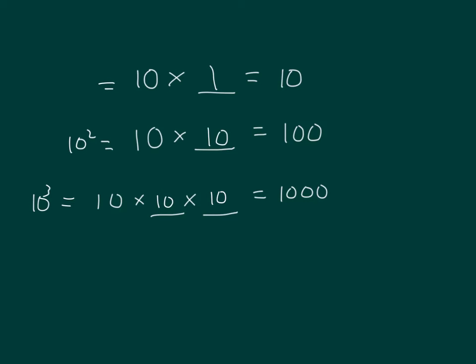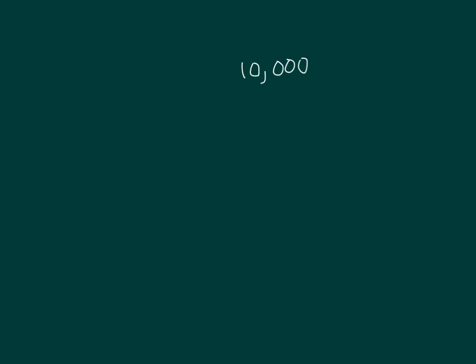And in our first instance, we only had 10 to the first power. How many times would we have to multiply 10 together to get to 10,000? Well, 10 times 10 already is 100. If we multiply by another 10, we get to 1,000 as we saw before. So to be able to get to 10,000, we have to multiply 10 together 4 times.